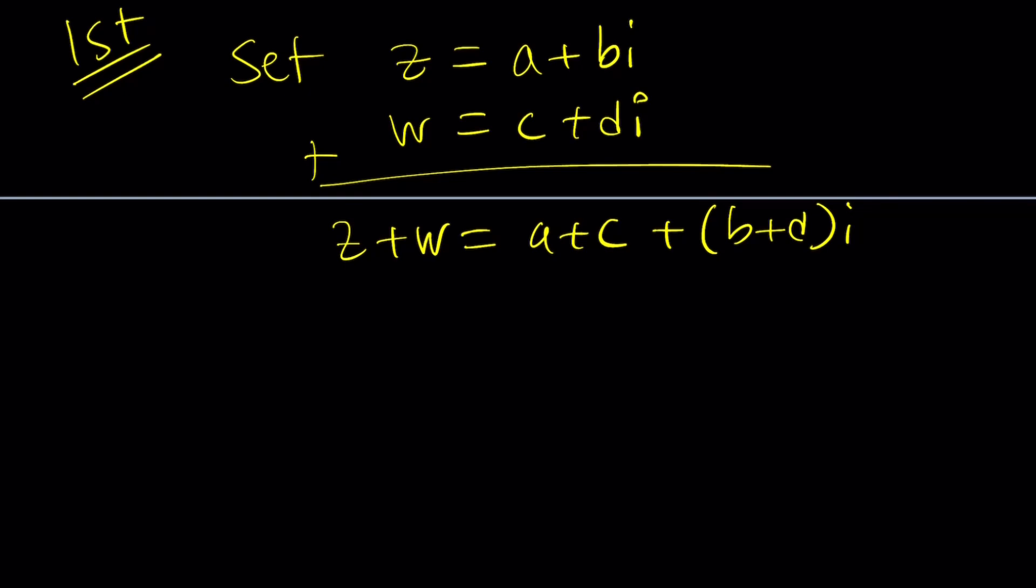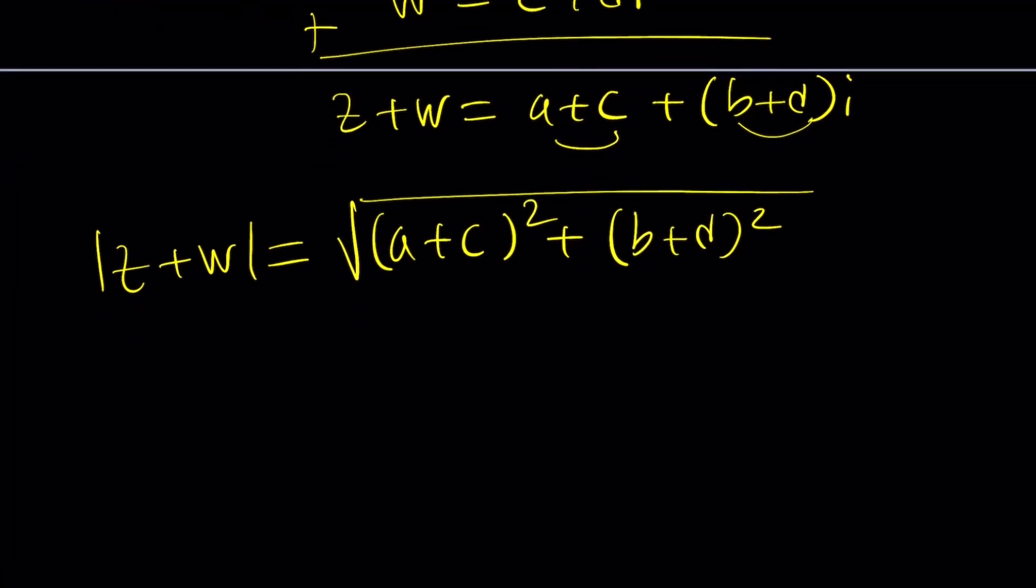Now, we're going to take the absolute value of this. So, absolute value of Z plus W is just going to be the square root of, we square the real part and then square the imaginary part, and then we add them and we take the square root. In other words, it's the distance from zero. Think of this as a point and the Pythagorean theorem gives you that.